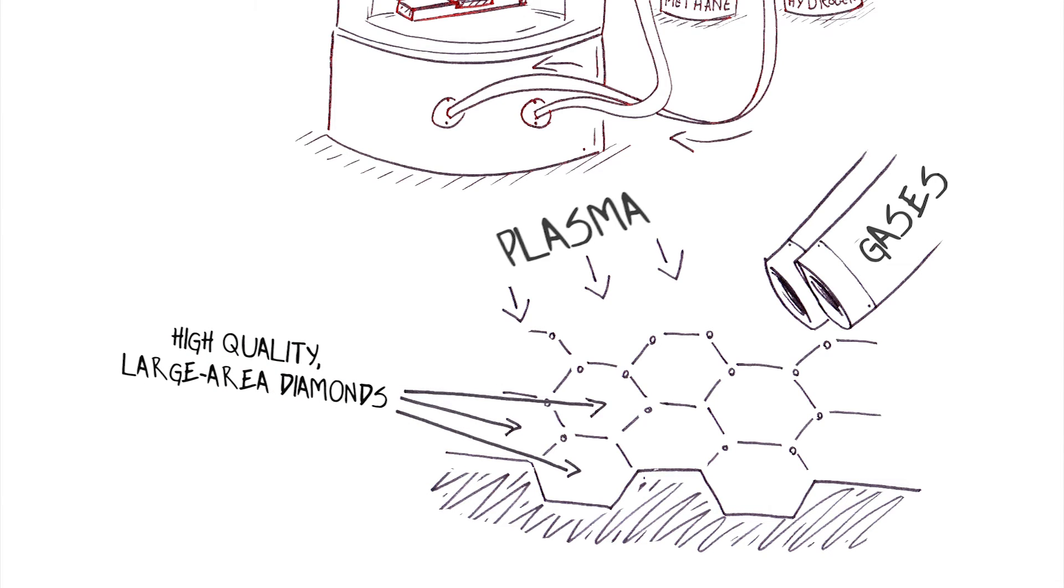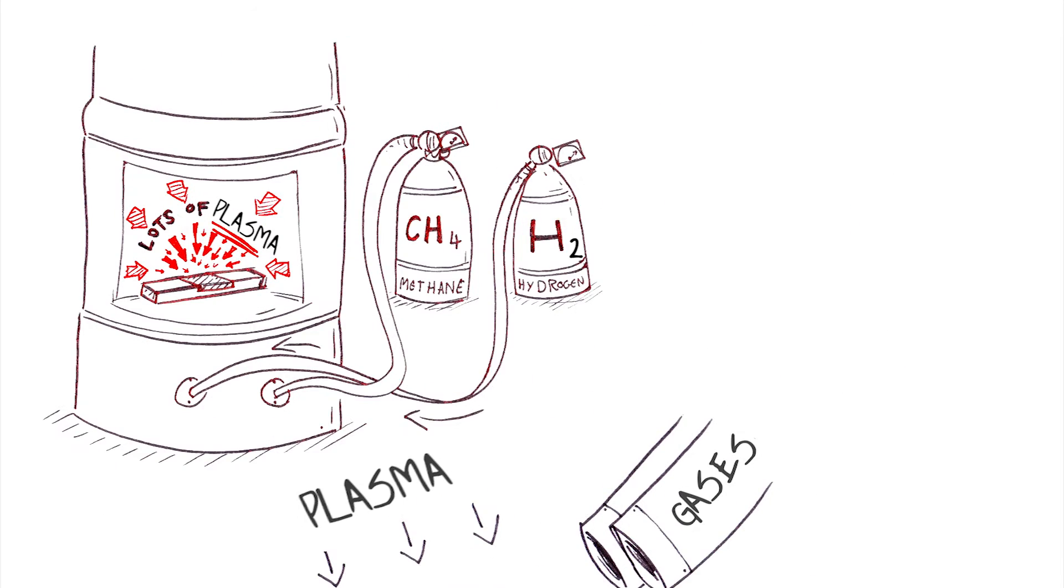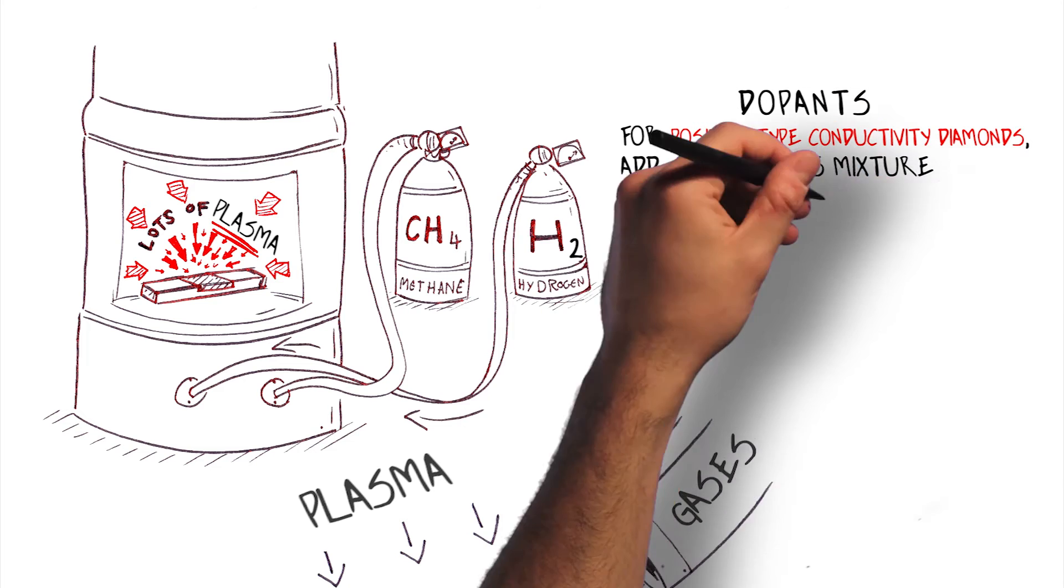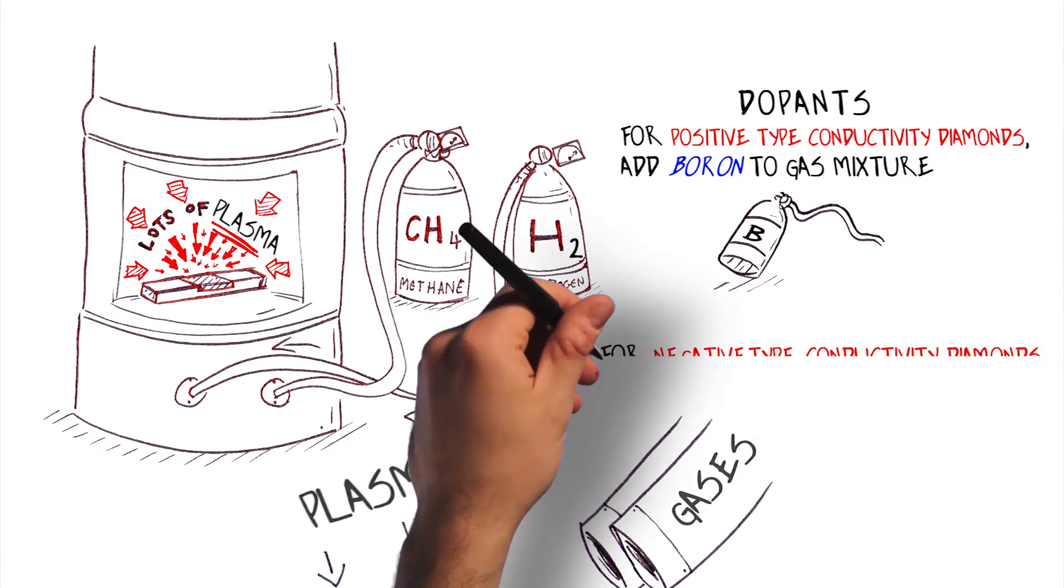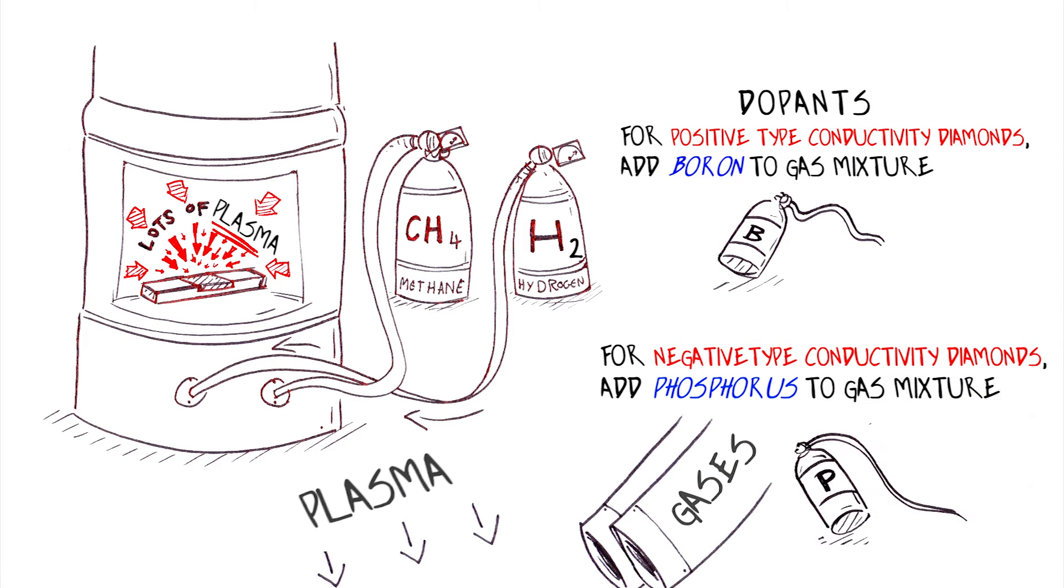Then we add in a couple of additional types of gas into the mixture, and this gives us dopants. If we want to grow diamond that has P-type conductivity, so this is diamond that's got an extra amount of positive charge, we take boron. And we do the same thing for negative type diamond, or N-type diamond, with phosphorus.